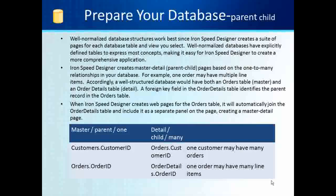IronSpeed Designer creates master-detail parent-child pages based on the one-to-many relationships in your database. For example, one order may have multiple line items. Accordingly, a well-structured database will have both an orders table, which is the master, and an order detail table, which is the detailed child. A foreign key field in the order detail table identifies the parent record in the orders table. When IronSpeed Designer creates web pages for the orders table, it will automatically join the order details table and include it as a separate panel on the page, creating a master detail.